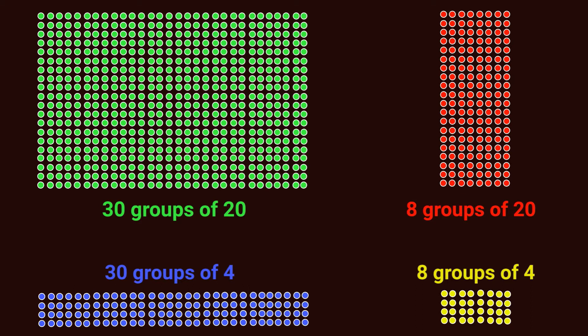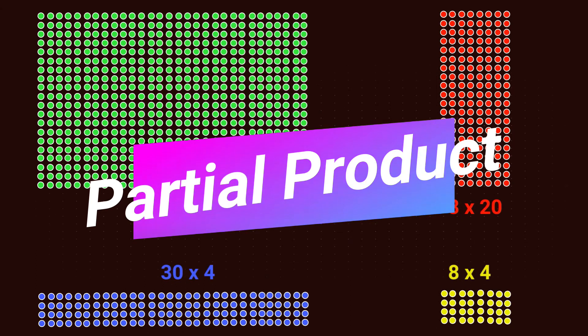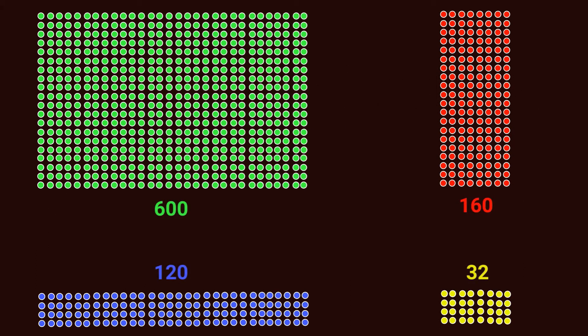Now I have 4 parts. If I find the product of each of those parts, I'm going to be multiplying to figure that out. So I have 30 times 20, 30 times 4 for my blue, 8 times 20, and 8 times 4. I need to find the product of each of those parts — a partial product, if you will. My green section has 600, my blue section has 120, my red section has 160, and my yellow section has 32. Those are my 4 partial products found using the distributive property.